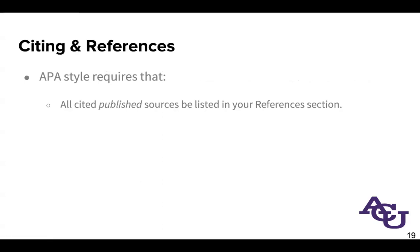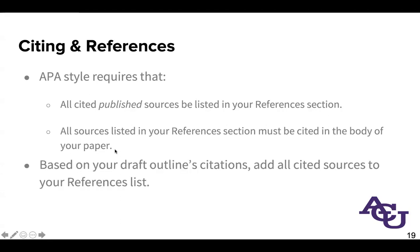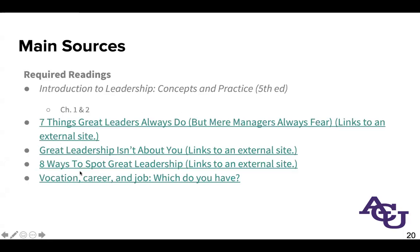Speaking of citations and references, something to keep in mind: different from many other styles, APA style requires that all published sources you cite be listed in your reference section. I say published, meaning someone else can retrieve them. So if you interviewed your coworker, you would cite that, but it's not a published source, so it wouldn't end up in your references section. But if you have something listed in your reference section, it must be cited in the body of your paper. As you start building your outline, once you put a citation in there, add it to your reference section as well.